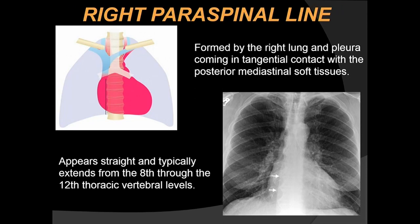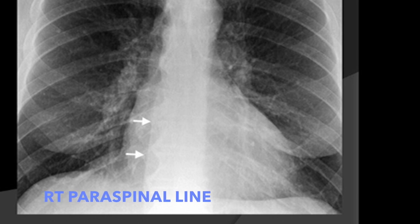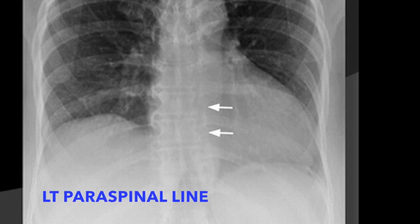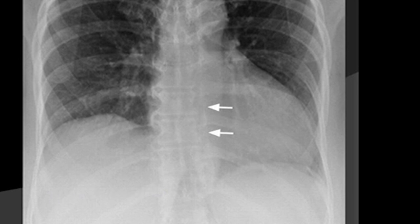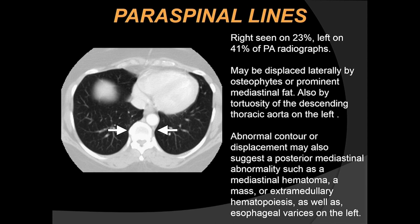The right paraspinal line is formed by the right lung and pleura coming in tangential contact with the posterior mediastinal soft tissues. It appears straight, typically extending from the eighth to twelfth thoracic vertebral levels. The left paraspinal line is formed by tangential contact of the left lung and pleura with the posterior mediastinal fat, left paraspinal muscles, and adjacent soft tissue, extending from the aortic arch to the diaphragm and typically lying medial to the lateral wall of the descending thoracic aorta. The right paraspinal line is seen in about 20% and the left in about 40% of patients.